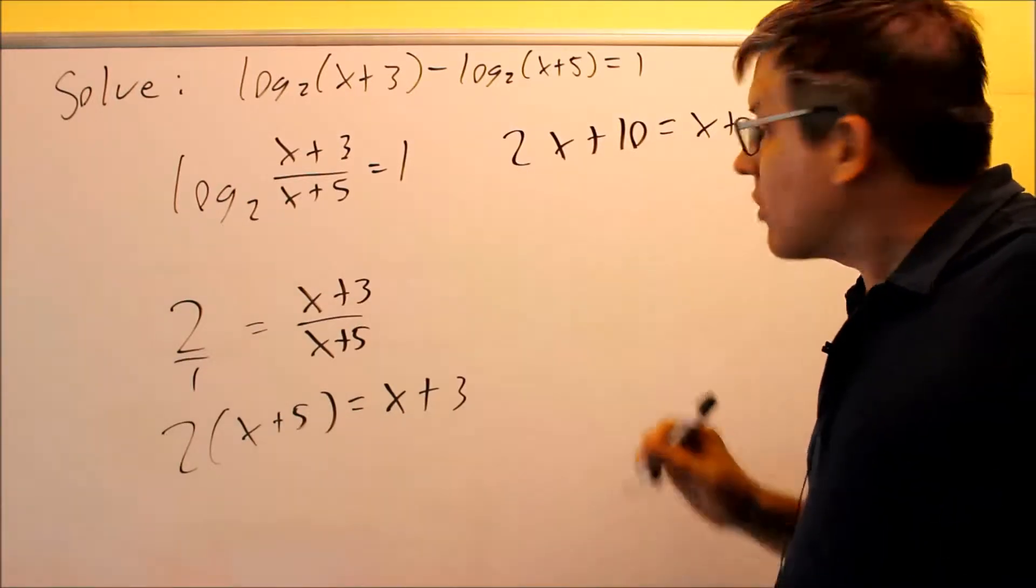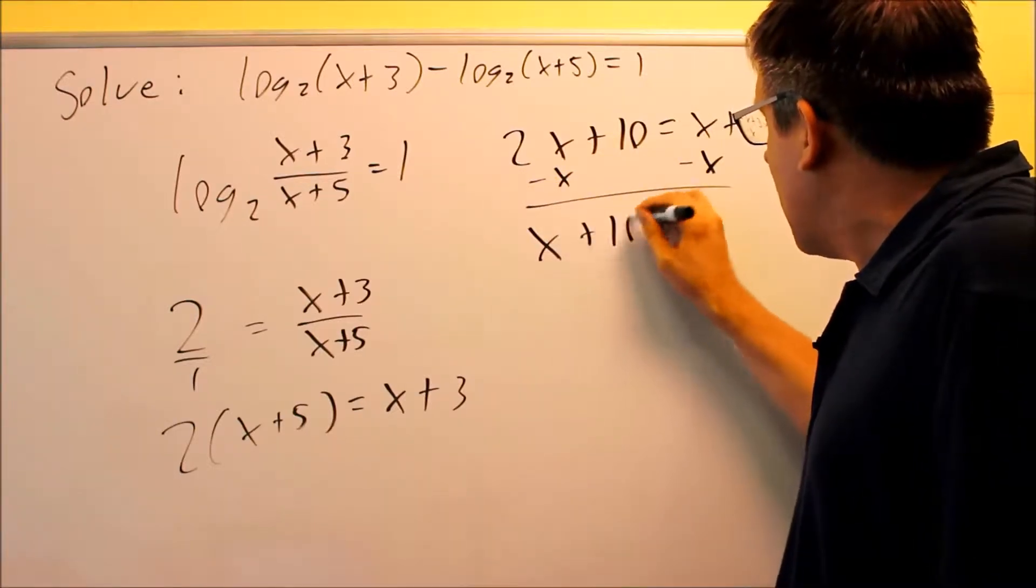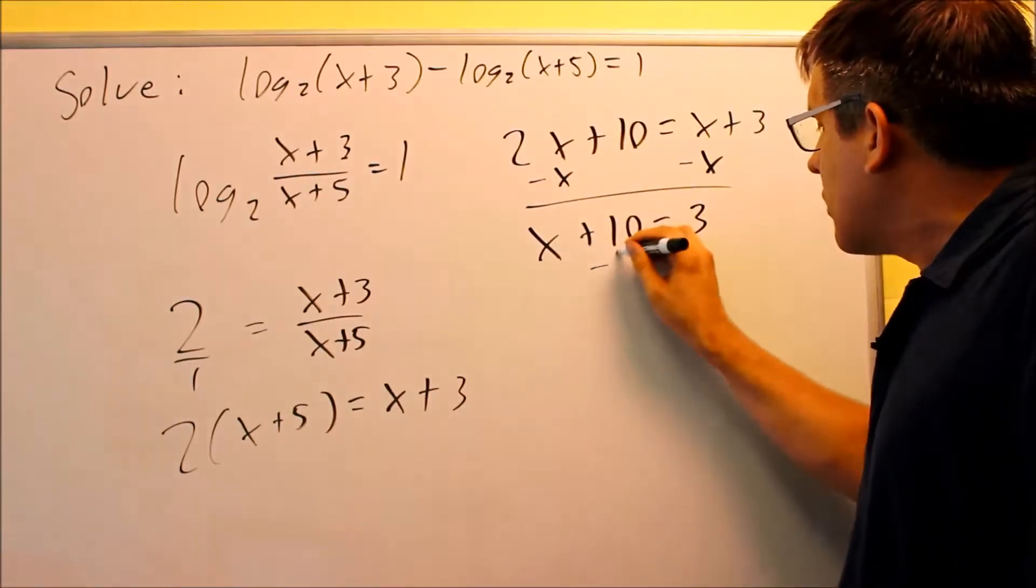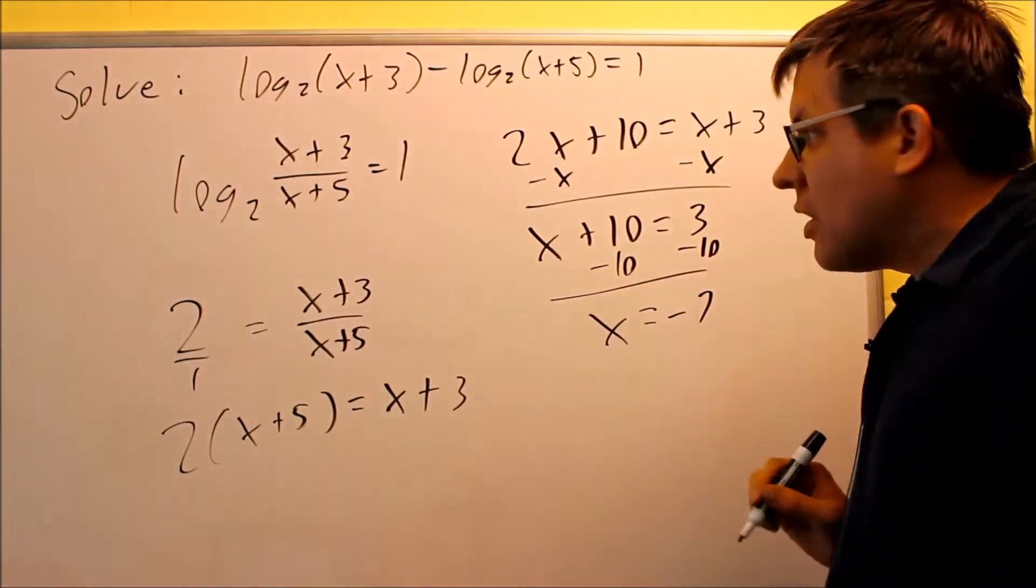We need to solve this for x, so we're going to subtract x from both sides. We get x plus 10 equals 3. Then subtract 10 from both sides, and we get x is equal to negative 7.